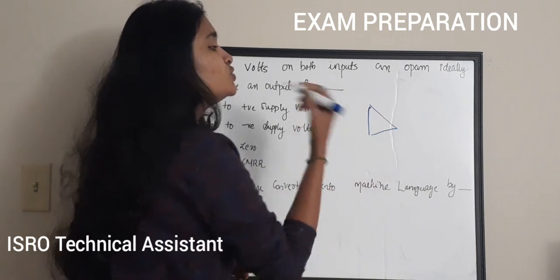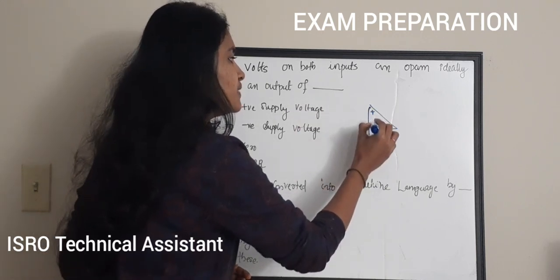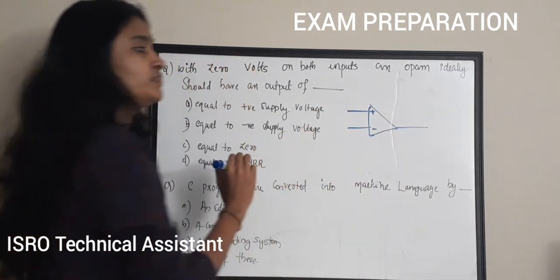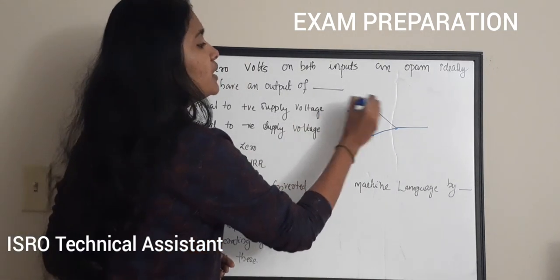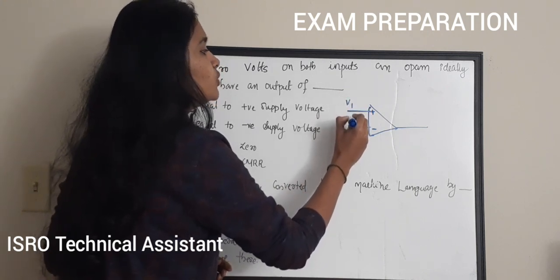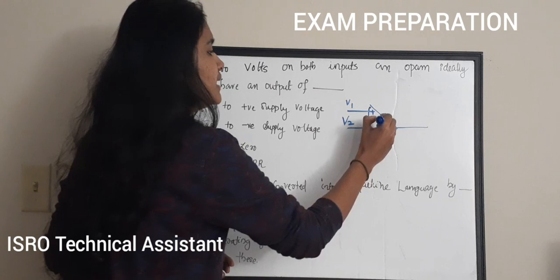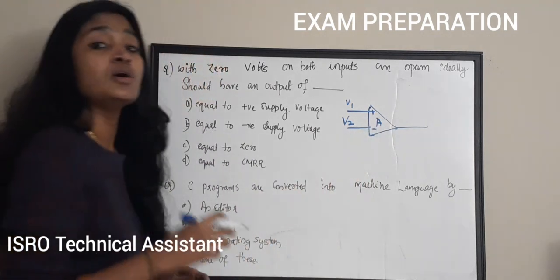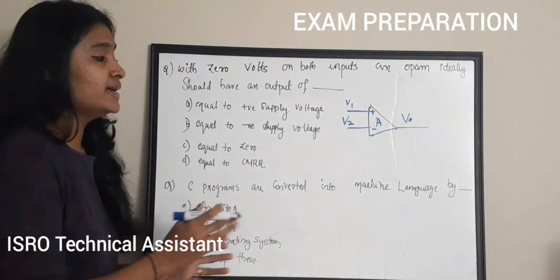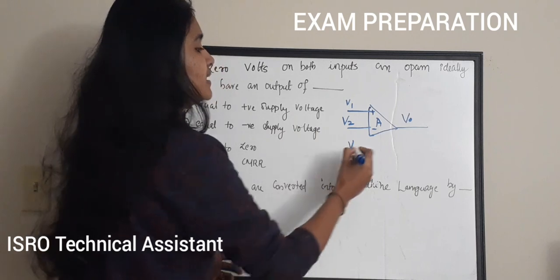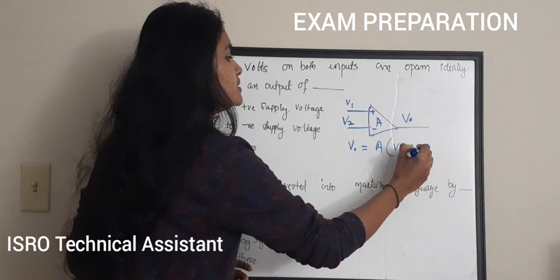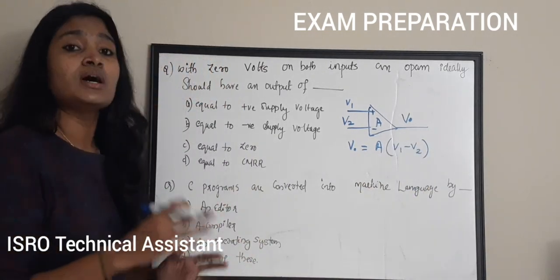An op-amp is an operational amplifier consisting of two input terminals — the positive non-inverting terminal and the negative inverting terminal — and one output. Let V1 be the input on the non-inverting terminal, V2 be the input on the inverting terminal, A be the gain of the op-amp, and V_out be the output. Then V_out = A × (V1 − V2).